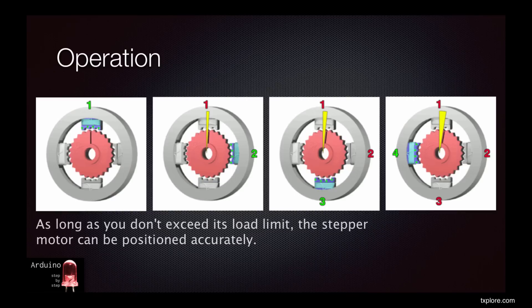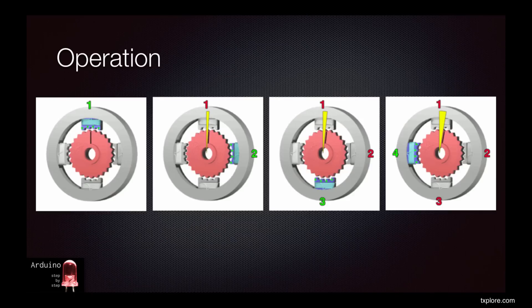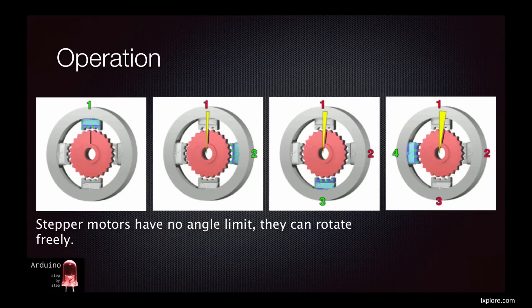As long as externally applied torque does not force the shaft to skip or miss any steps, perhaps by a heavy load that the stepper motor can't move, the motor controller will always be able to maintain accurate positioning information. Unlike servo motors, stepper motors have no angle limit.